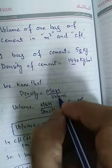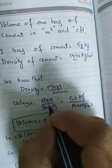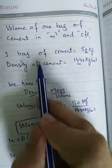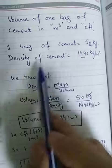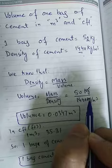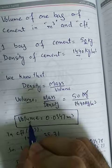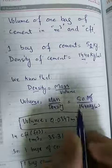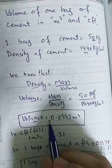So density equals mass per unit volume. From this equation, volume equals mass divided by density. The mass of cement in one bag is 50 kg and the density of cement is 1440 kg per meter cube. Kilograms cancel out and the volume comes out to be 0.0347 meter cube.